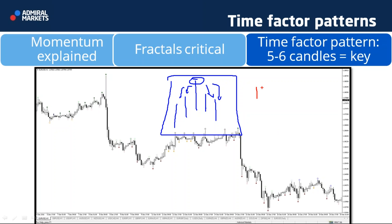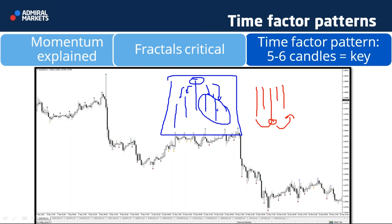For a bearish fractal, it doesn't matter the sequence — as long as the middle candle has the lowest low and it's lower than two to the left and two to the right. Fractals will appear when at least two candles have not posted a lower low or higher high, meaning momentum is temporarily weakening.